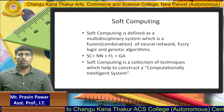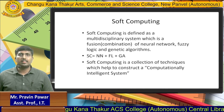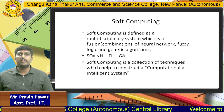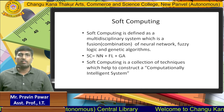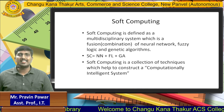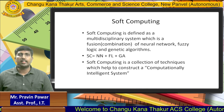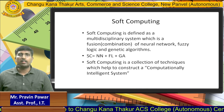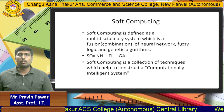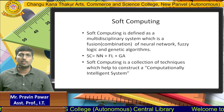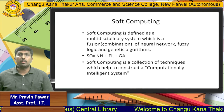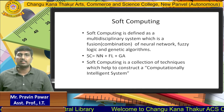Soft computing is defined as a multidisciplinary system which is the fusion of three components: neural networks, fuzzy logic, and genetic algorithms. That is why SC = NN + FL + GA. Soft computing is the collection of techniques which help to construct a computationally intelligent system. If it is generating any kind of intelligent system as part of computation, that will be known as soft computing.